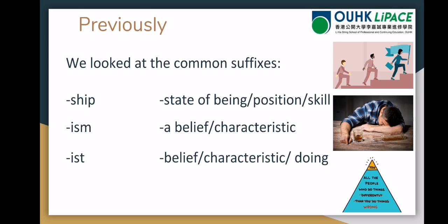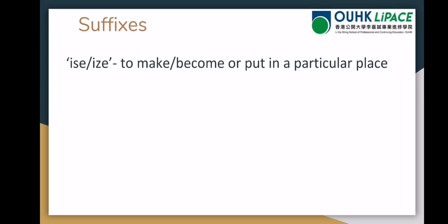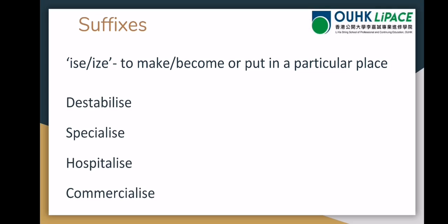So let's look at today's new suffixes. Words that end in '-ise' or '-ize' (I-S-E or I-Z-E) mean to make something, to become something, or to put something in a particular place. The first example: 'stabilize' means to make something stable, or for something to become stable — such as stabilizing a government.